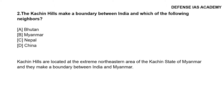Question 2: The Patkai hills make a boundary between India and which of the following neighbors? The correct answer is option B, Myanmar. The Patkai hills are located at the extreme northeastern area of the state of Myanmar and they make a boundary between India and Myanmar.